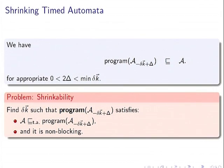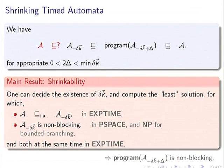We want to find parameters δ, k such that the program semantics is able to timed-simulate the specification and is non-blocking. If you have these conditions, it's a good implementation: it contains all intended behavior, is non-blocking, and is safe. Our main result is that one can decide these parameters and compute the least parameters δ × k for which A can be timed-simulated by the shrunk automaton and the shrunk automaton is non-blocking.